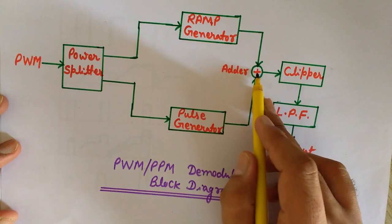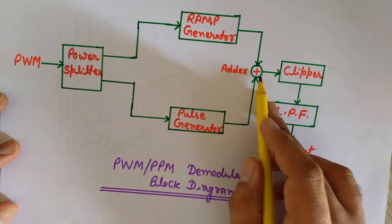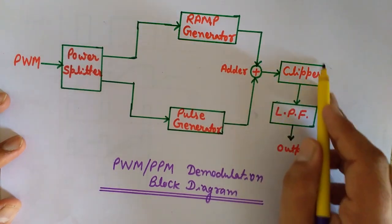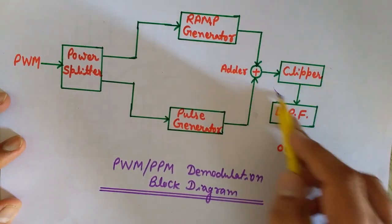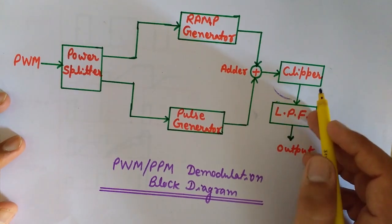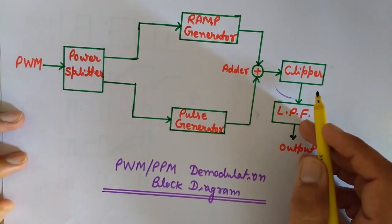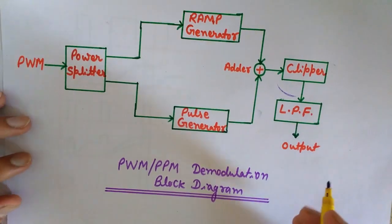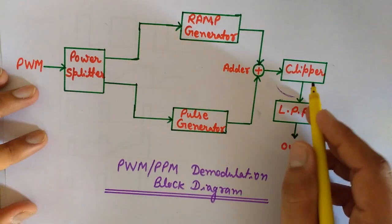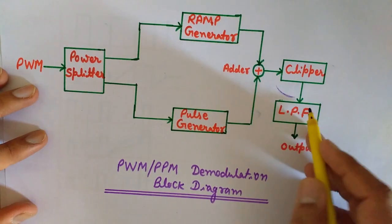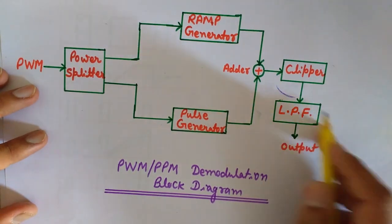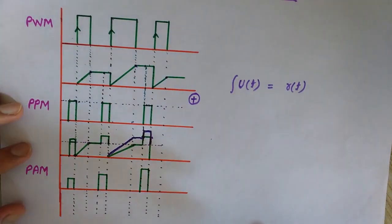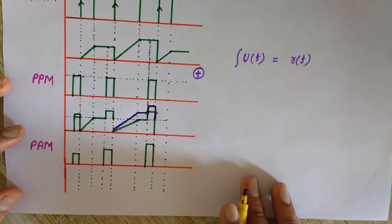The combined output of the ramp and pulse generators is passed through a clipper circuit. The clipper's job is to clip off the undesired part — it cuts off everything below a reference amplitude level — and the desired part above that line is retained. The clipped output is then passed through a low pass filter to get the message signal.